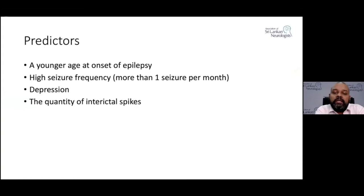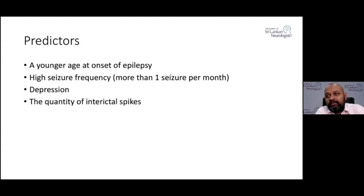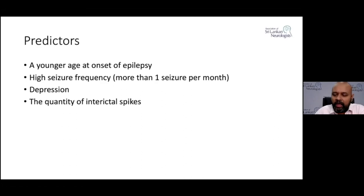Concurrent comorbidities such as depression are also a predictor. The quantity of interictal spikes matters too — the more interictal spikes, the higher the chance of pharmacoresistant epilepsy. There are epilepsies with a very high spike load, and others called oligo-spikers where the spike count is very low. Patients with a low spike count actually have a higher chance of responding to medication. Patients with these attributes are more likely to turn out to be pharmacoresistant.